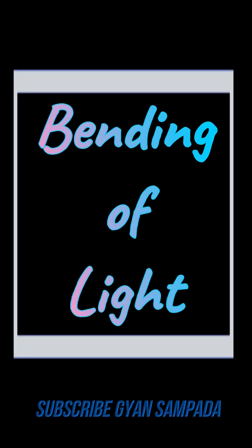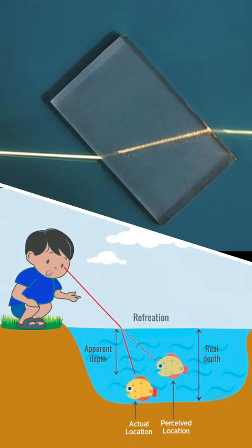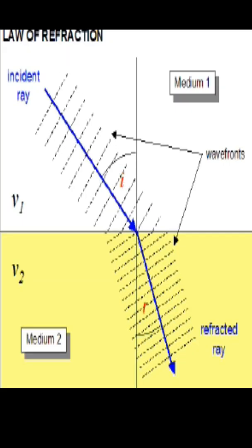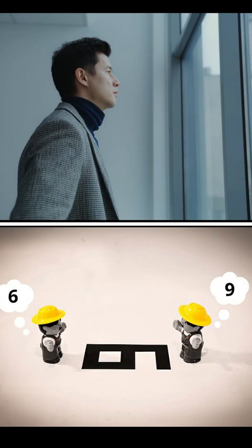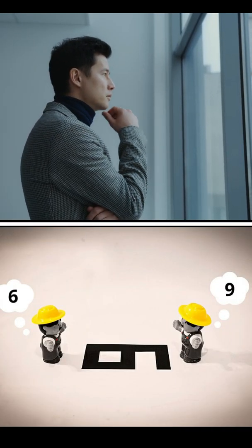We observe bending of light when it passes through matter, for example glass, and the explanation given for this is the Fermat's principle or the marching soldier analogy or the Huygens principle. However, these explanations are satisfactory but incomplete.